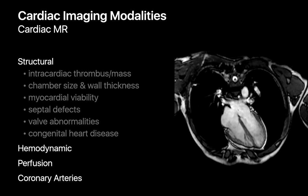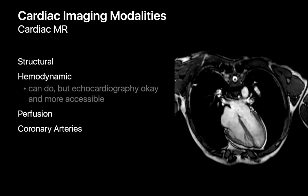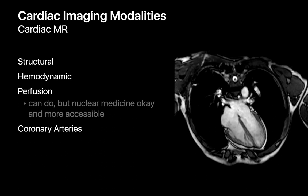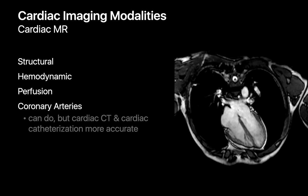For example, although cardiac MR allows us to assess hemodynamics, echocardiography does an acceptable job and is way more accessible. Cardiac MR allows us to evaluate myocardial perfusion, though cardiac nuclear studies do an okay job and are much more accessible too. And while cardiac MR allows us to assess the coronary arteries, cardiac CTA and cardiac cath are usually more accurate than cardiac MRI.